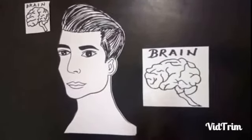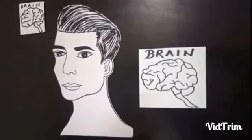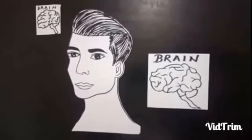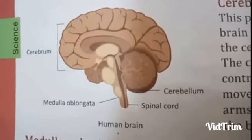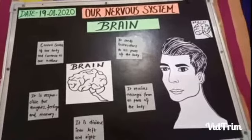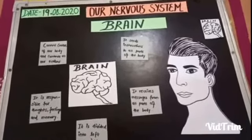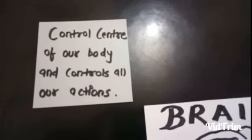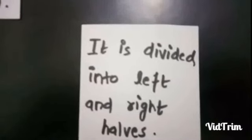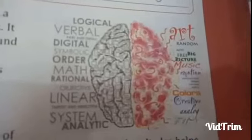The brain is the most complex organ in the whole human body, and it is protected by the skull. Brain is the control center of our body and it controls all our actions. It sends instructions to all parts of our body. It is divided into left and right halves — here you can see the human brain divided into two halves, a left side and a right side.